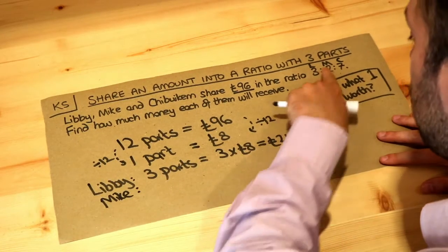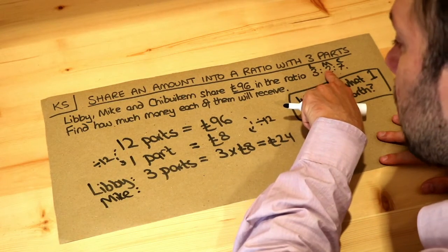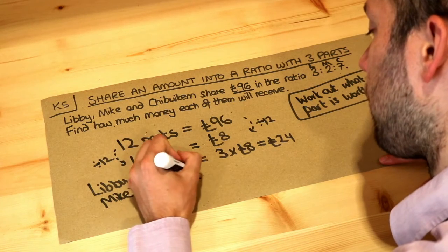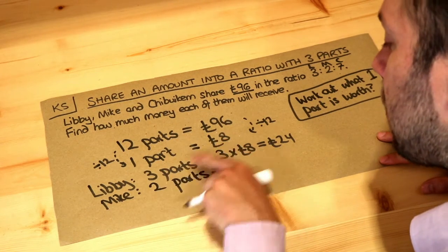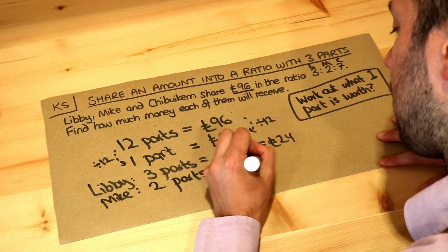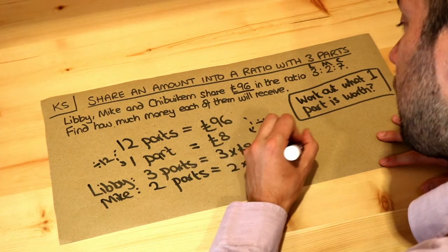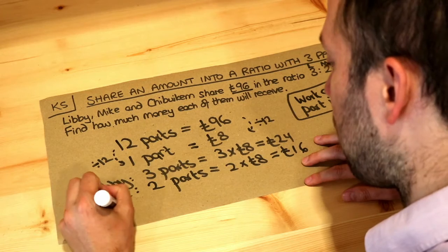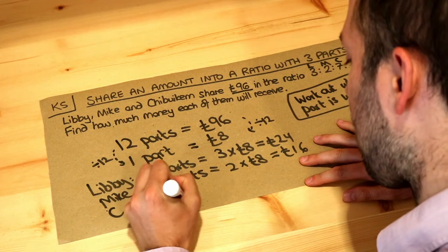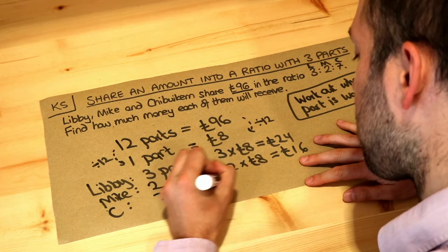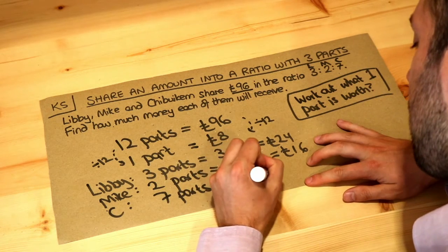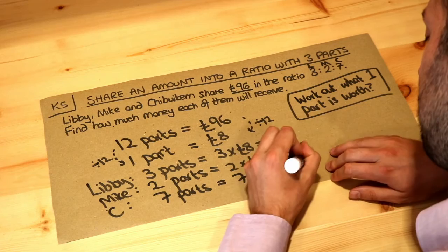Mike gets two parts of the £96, so two parts is two times £8, which is £16. And finally Chibokam gets seven parts in the ratio, so seven times £8 is £56.